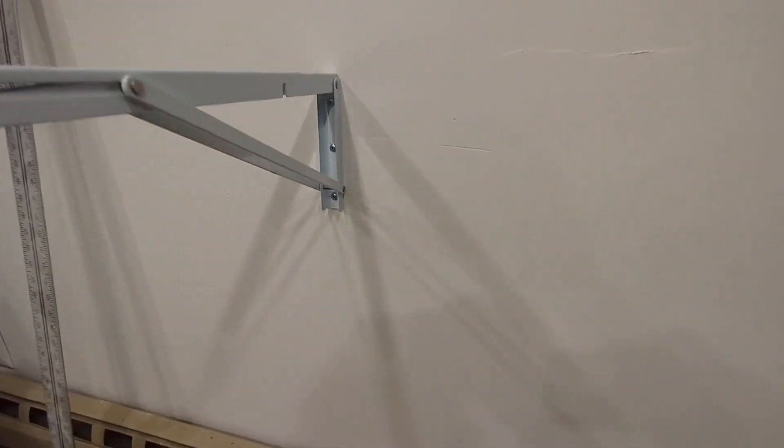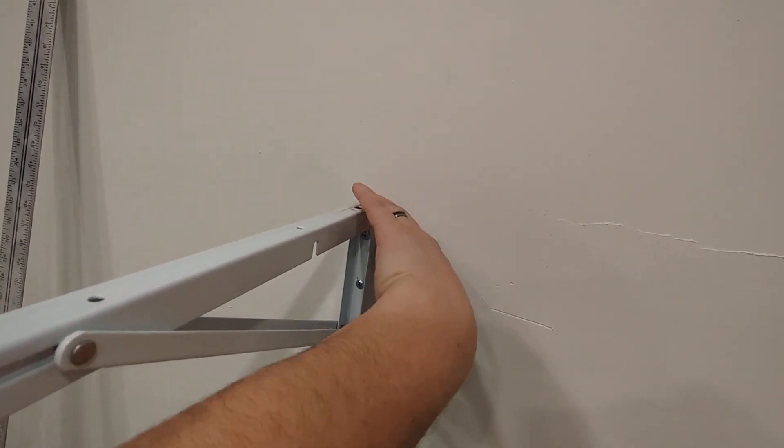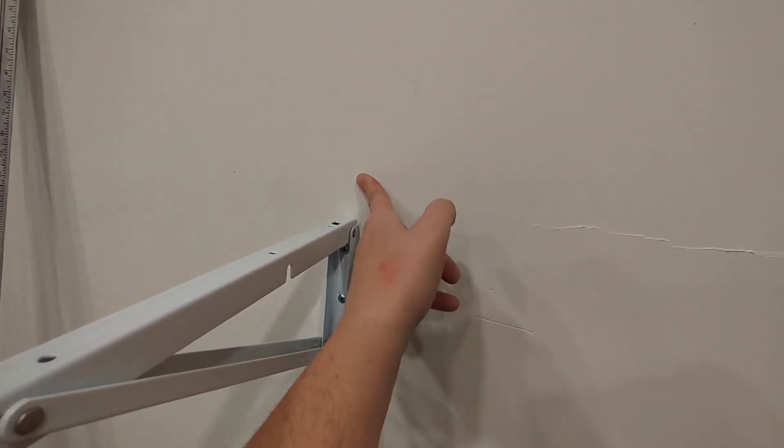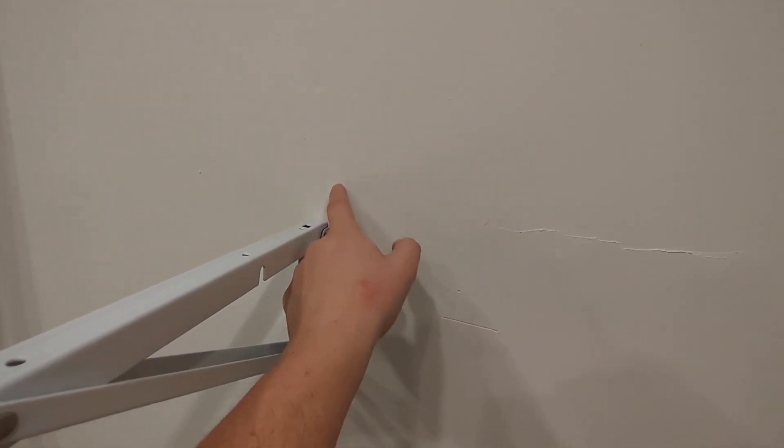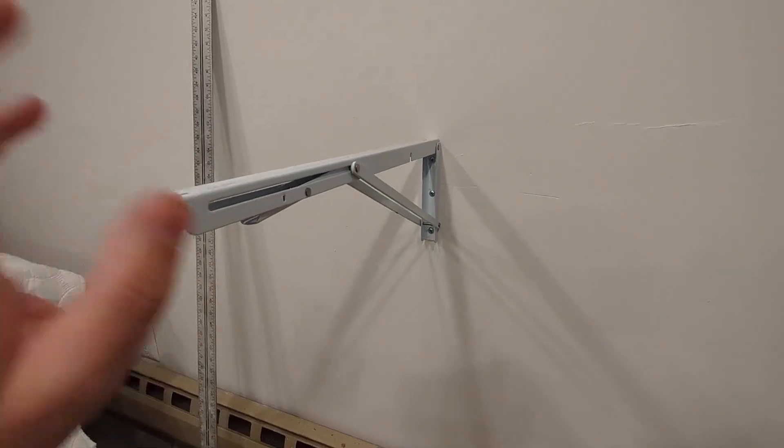Once I found the stud, I took a tape measure and measured to the top here. This is going to be the bottom of my shelf. I added three-quarters since I'm putting three-quarter inch plywood on top. So the top will be 36 inches, but you can set it at whatever height you want on the wall.